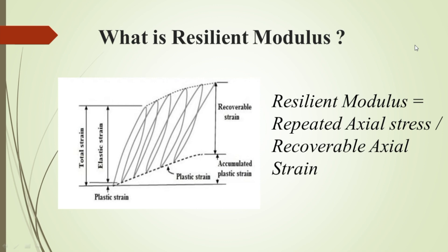There are basically two types of strains: irrecoverable and recoverable strain. During compaction of the granular layers, it will undergo considerable amount of strain and become stabilized. After which, when the traffic load is applied, the irrecoverable strain gets nullified and there will be only recoverable strain. So the ratio of repeated axial stress applied with respect to which the recoverable strain is measured is called resilient modulus.